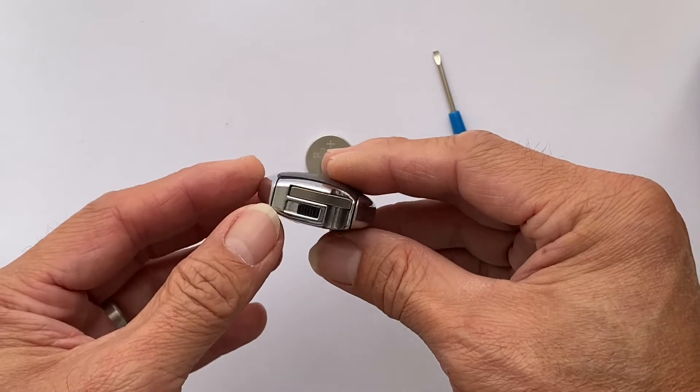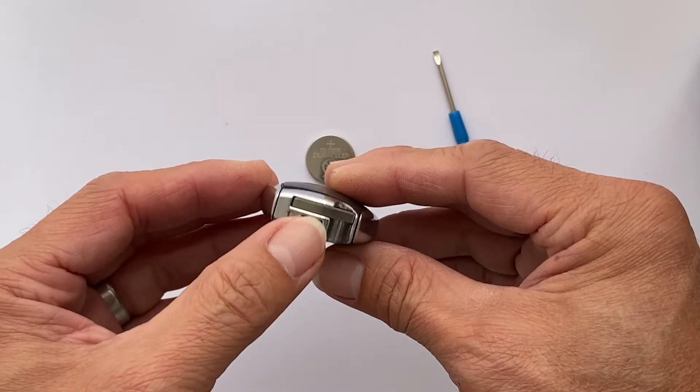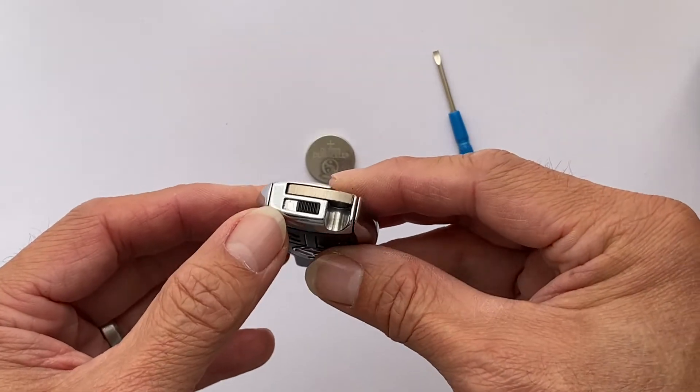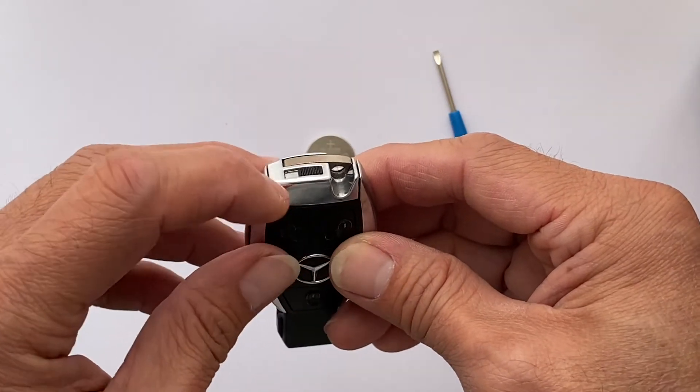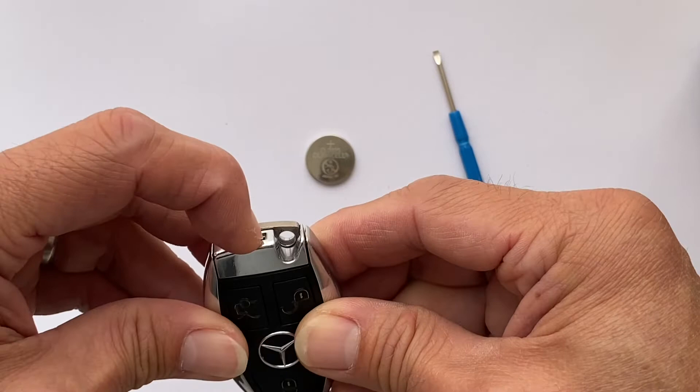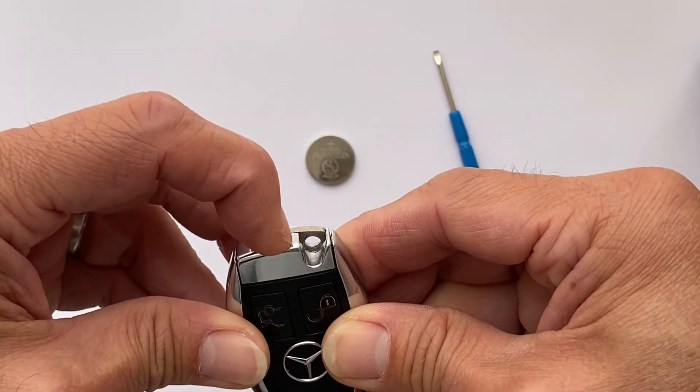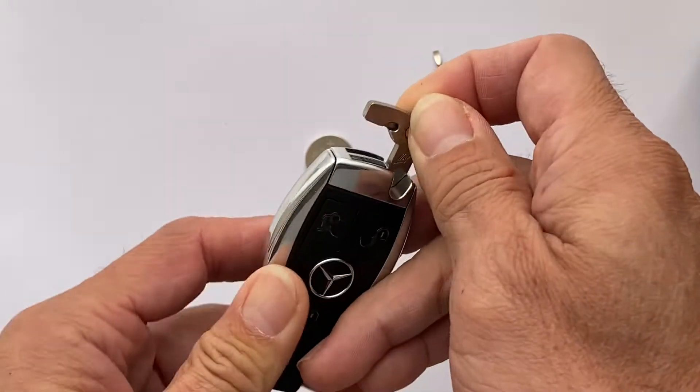It's more or less the same with the rest of the Mercedes key. To get the blade out, you just need to pull the lever here, the black lever here. If you push it to the side, the key will come out.